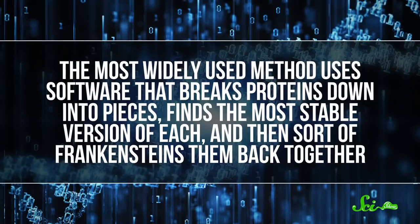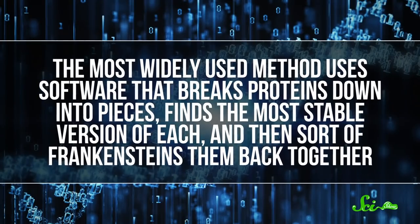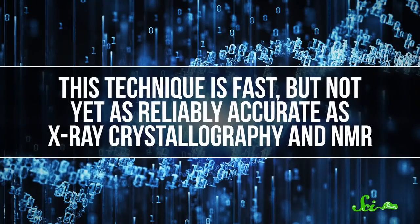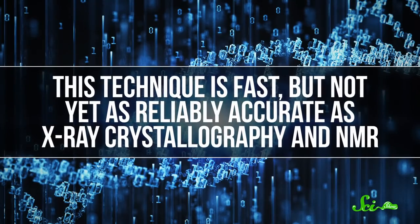But unfortunately, those minor structural differences are essential. They're what make each protein unique. So while predicting how a protein generally folds can be easy, predicting how a protein folds specifically is very hard. Even harder is solving the structure of a protein whose sequence is unlike any other protein. That requires a technique called de novo prediction. The most widely used method uses software that breaks proteins down into pieces, finds the most stable version of each, and then sort of Frankensteins them back together. This technique is fast, but not yet as reliably accurate as X-ray crystallography and NMR. But the good news is, it's getting better every year. And that opens the door to designing more drugs that work exactly how we need them to.